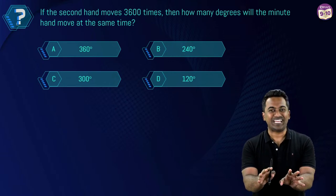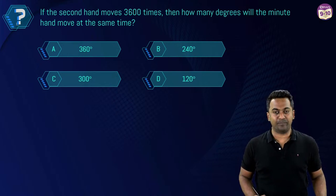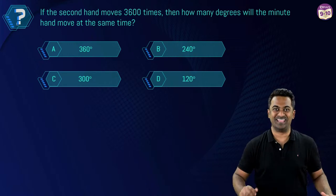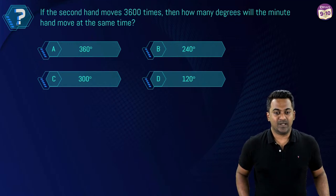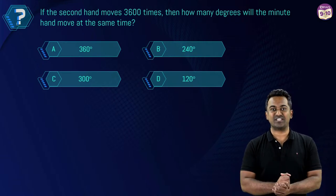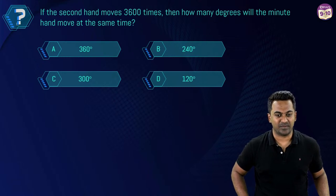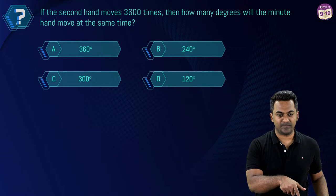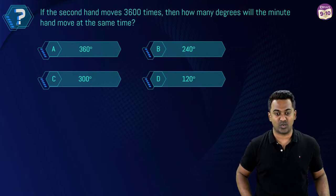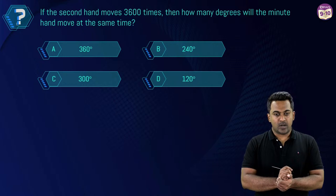Next question — this one requires some thinking: if the second hand moves 3600 times, how many degrees will the minute hand move at the same time? Take your papers and pens and work it out. Most of you are saying 360 degrees — let's check the answer.